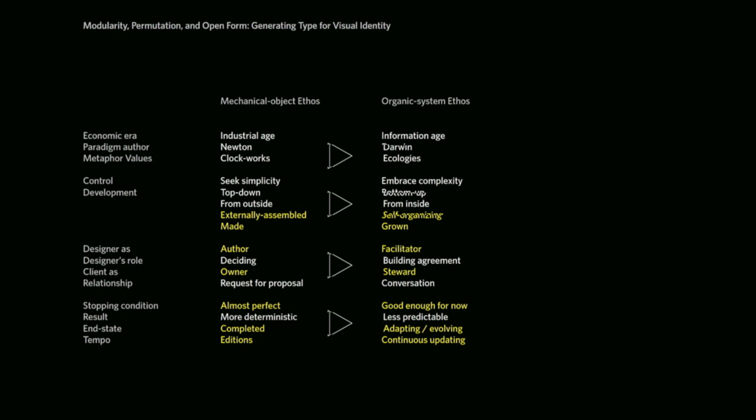Some of the things I found interesting were the idea of something that's self-organized or grown rather than made. Designer as facilitator versus designer as author. The idea of client as a steward of the thing that is designed rather than an owner of that thing. And finally, a stopping condition that is 'good enough for now' and can continue to adapt and evolve, rather than something that is almost perfect and complete. These are things that challenge me because I feel like I was educated in the more mechanical object ethos, and so trying to break out of that and understand what these other ideas mean.